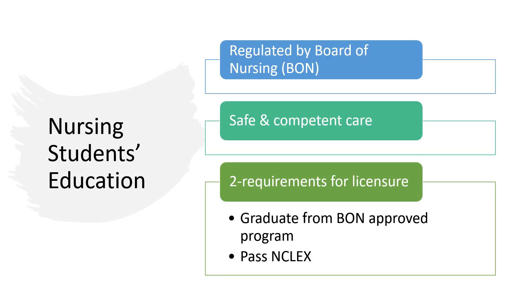Educational nursing programs are regulated and approved by the State Board of Nursing to ensure that these programs cover the knowledge and skills needed for graduate nurses to practice safe and competent nursing care. For nursing programs to gain approval from the State Board of Nursing, the program must meet state requirements under the Nurse Practice Act, including administrative rules and regulations. A student enrolled in a nursing education program must complete two requirements to obtain nursing licensure: graduate from a Board of Nursing-approved program and pass the National Council Licensure Examination, or NCLEX.